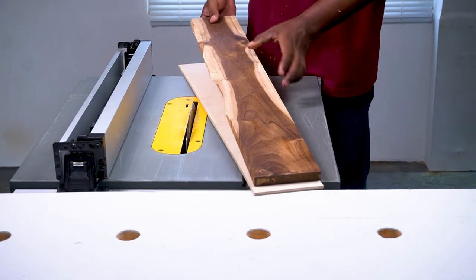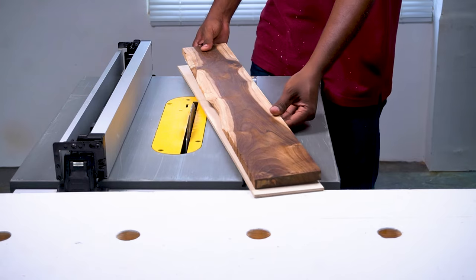Turn off your table saw and detach the board from the plywood, noting one straight edge on the board.